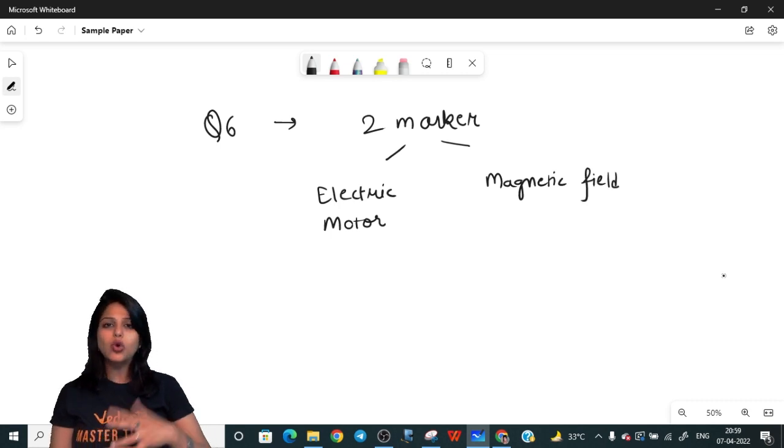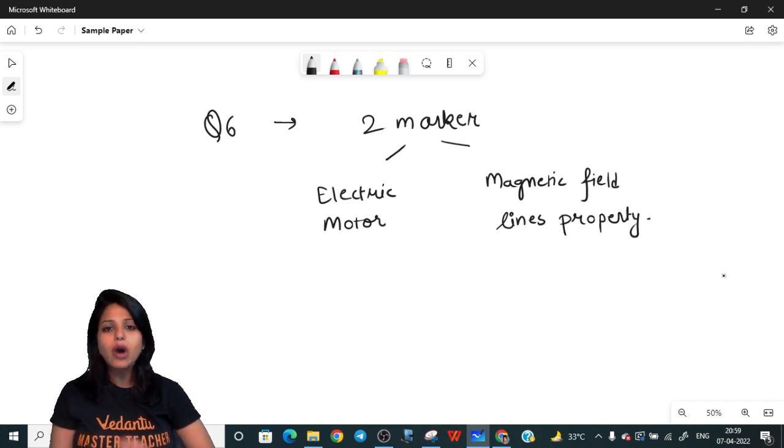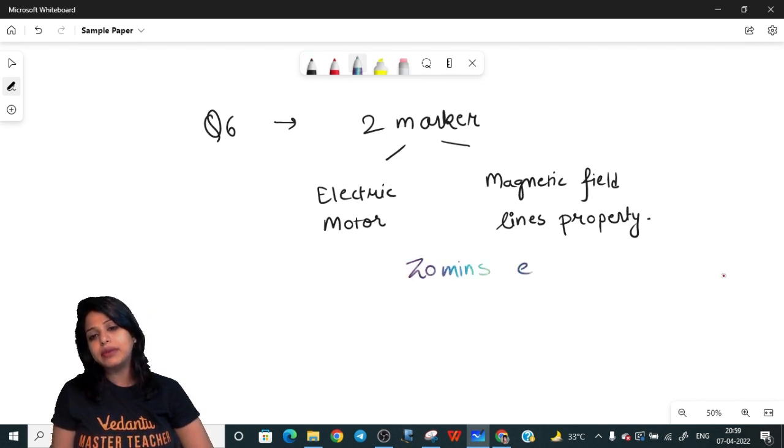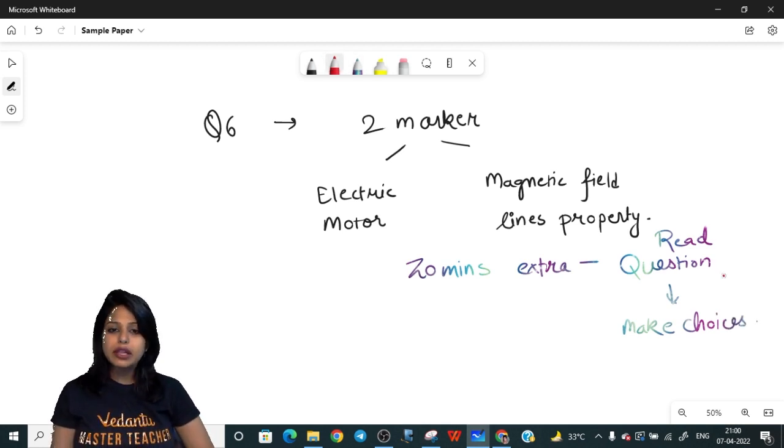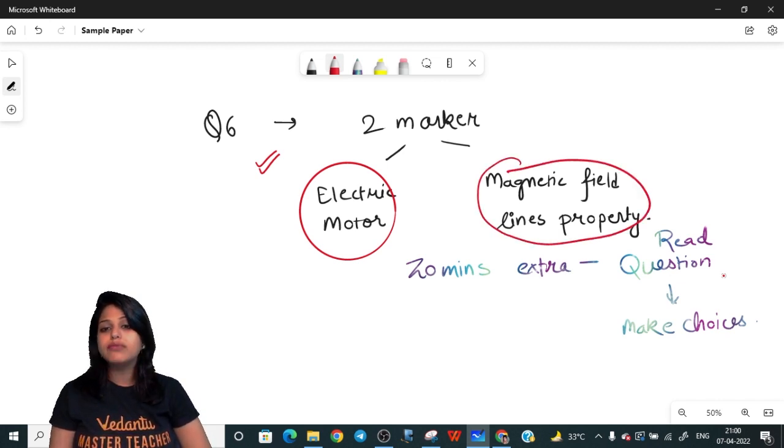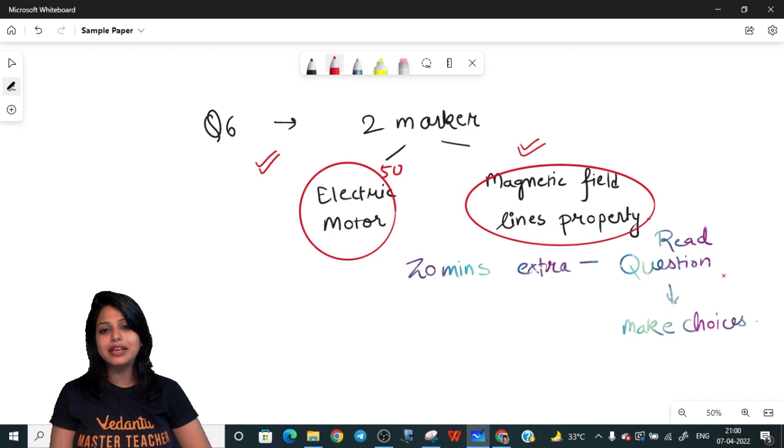We have two questions for question number six that are two markers and I have to choose which one to go for - the electric motor or the magnetic field line properties. If you are confident with electric motor, definitely go for that. If you even have 10 percent of doubt and you have more clarity for this, go for this. But if both are 50-60 percent, then go with the one which has higher percentage for you.